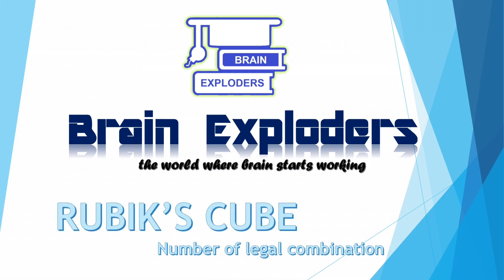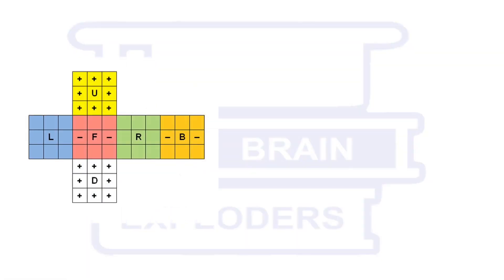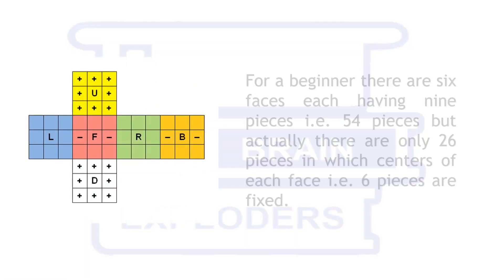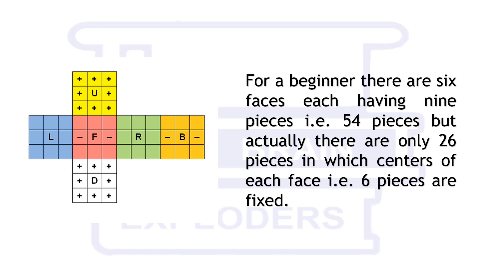In this video, we will show how to calculate the total number of combinations for a 3x3x3 Rubik's cube. We will start from the beginning. For a beginner, there are 6 faces, each having 9 pieces on them. But actually, there are only 26 pieces in which centers of each face are fixed.